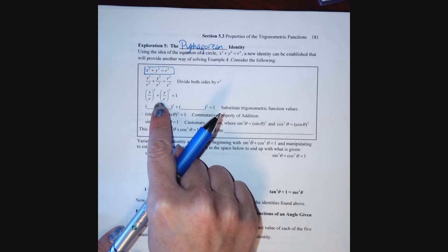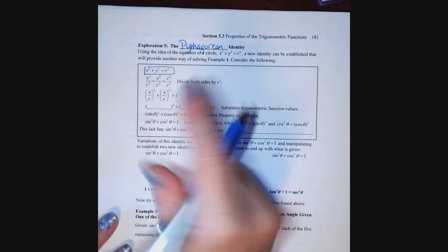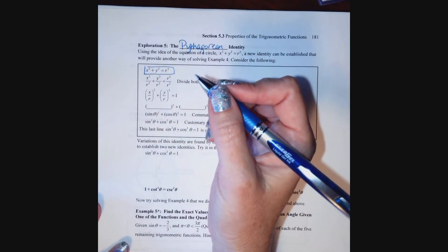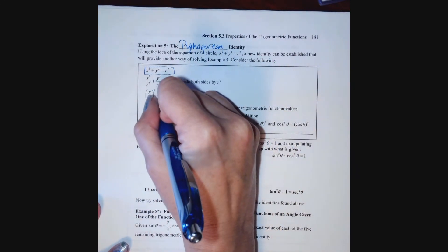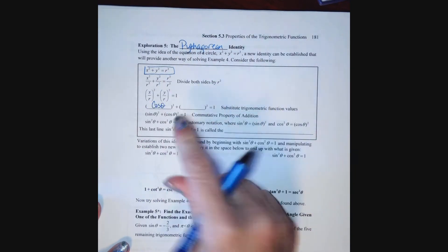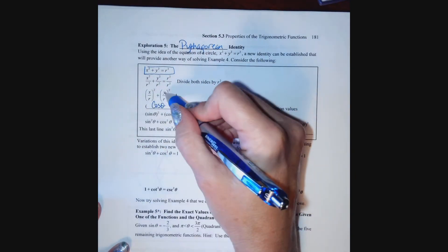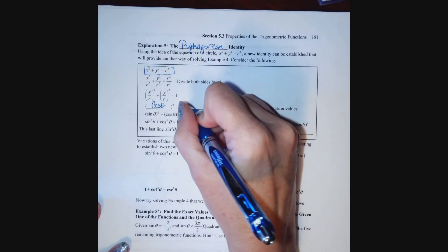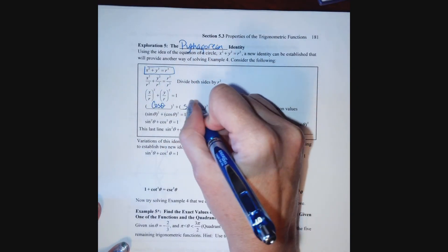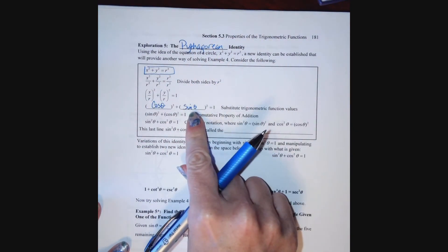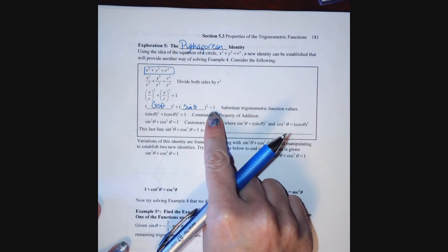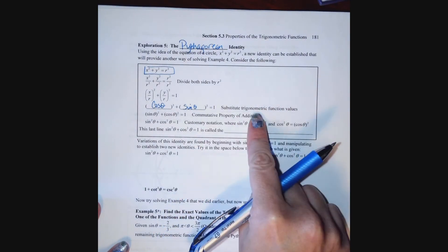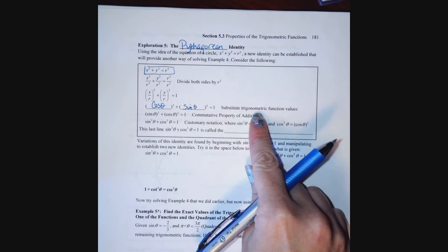x over r is cosine theta, and y over r represents sine theta, so we have cosine theta squared plus sine theta squared equals 1. We've substituted in these trig function values here.